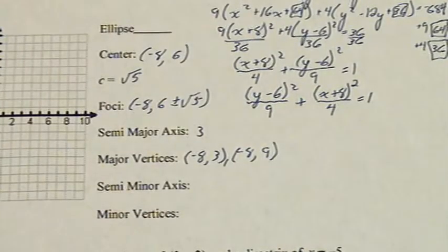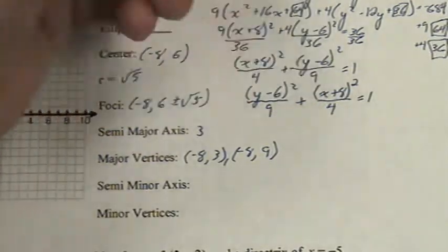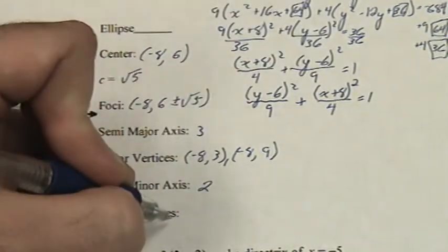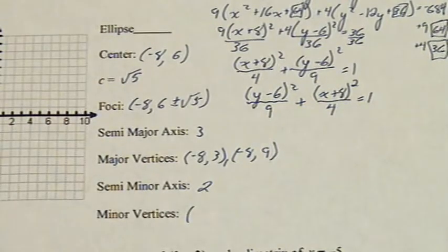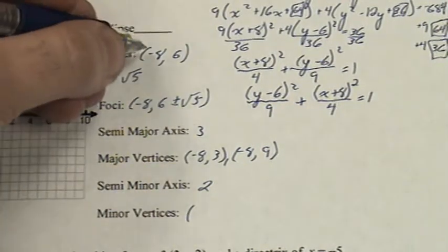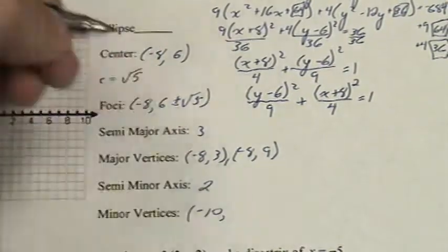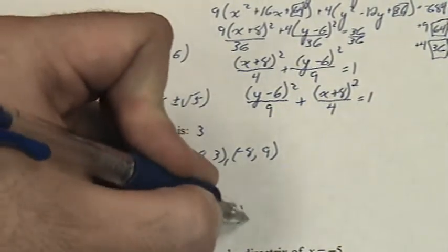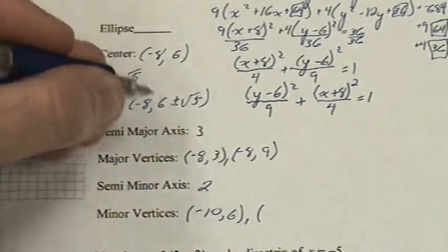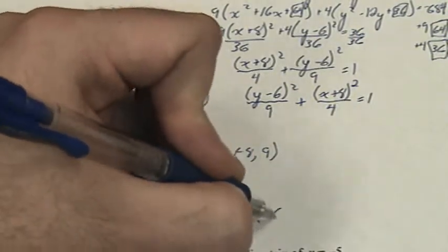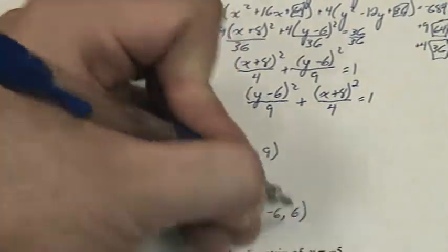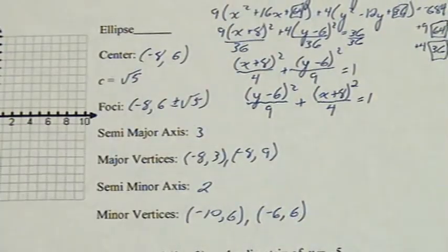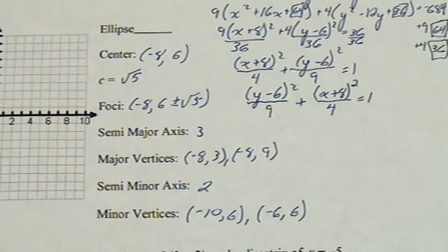For the semi-minor axis, that's the square root of 4, which is 2. This time, since we changed the y up till now, we're going to change the x. Negative 8 minus 2, which is negative 10, comma 6. And negative 8 plus 2, negative 6, comma 6. And that is all the information that is required to graph this ellipse.